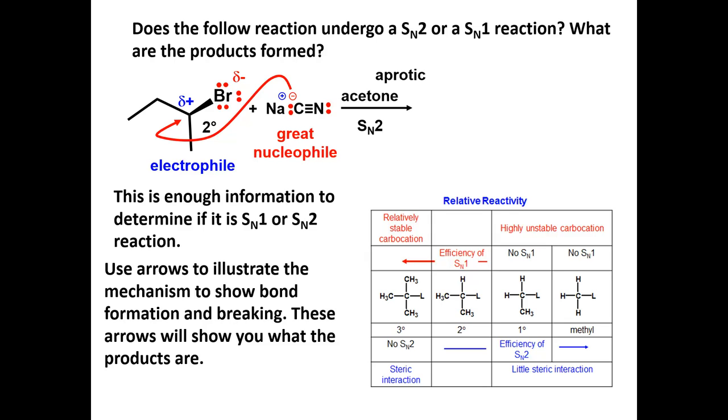This arrow shows the formation of a new carbon-carbon bond. Since there cannot be 10 electrons on the electrophilic carbon, the carbon-bromine bond must break. This is what the second arrow shows. It shows the movement of the electrons from the sigma bond to the bromine atom.